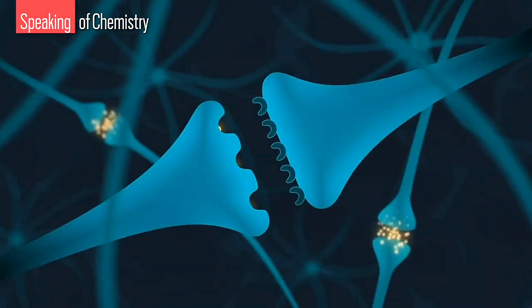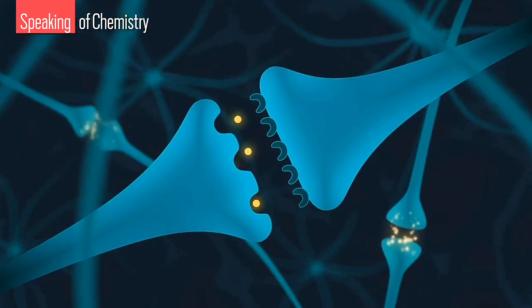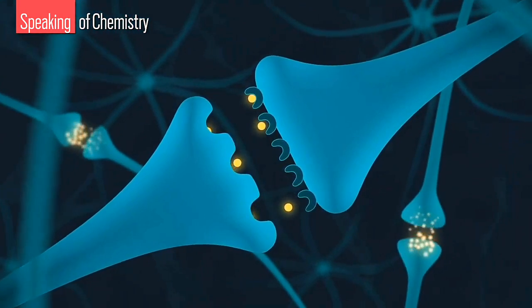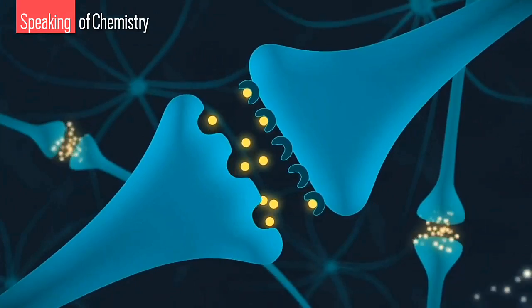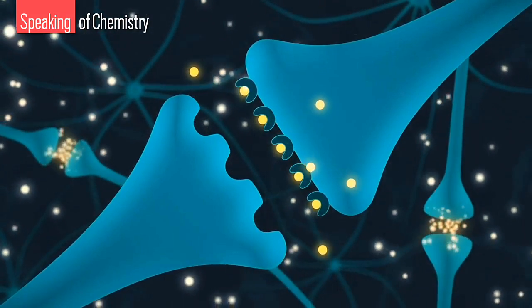Dopamine is one of the chemicals that neurons use to transmit signals to one another. But it doesn't just move from one neuron to another like electrons through a wire. It can also spread through the brain, more like a radio signal.